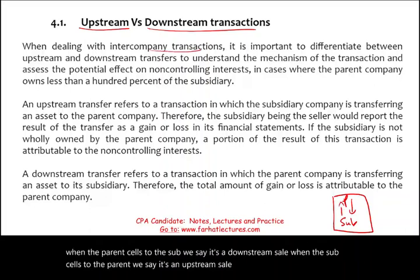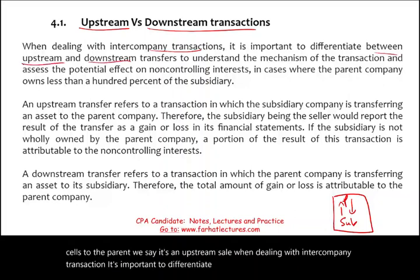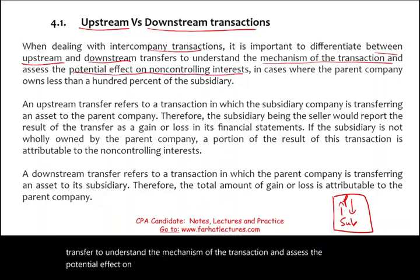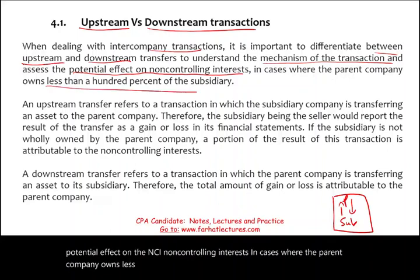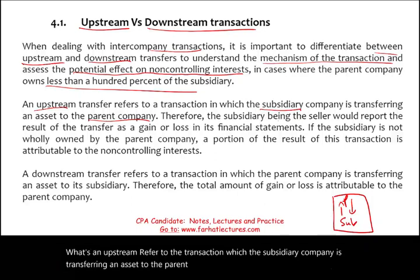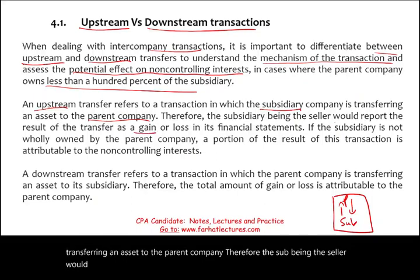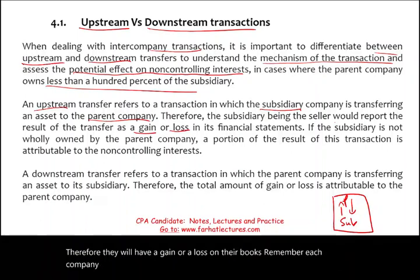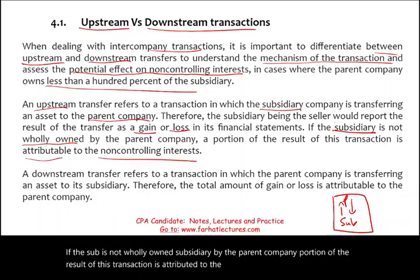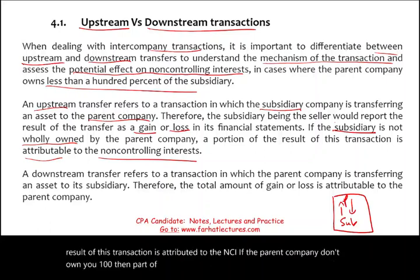When dealing with intercompany transactions, it's important to differentiate between upstream and downstream transfers to understand the mechanism and assess the potential effect on the NCI — non-controlling interest — in cases where the parent owns less than 100%. In an upstream transfer, the subsidiary is transferring an asset to the parent, so the sub reports the result as a gain or loss on their books. If the sub is not wholly owned, a portion of that gain or loss is attributed to the NCI.